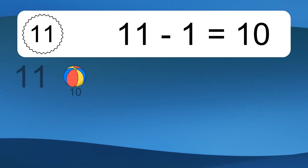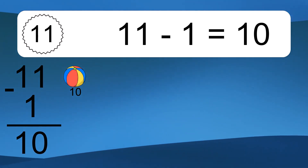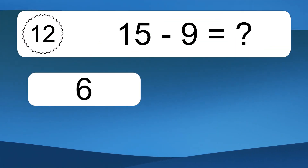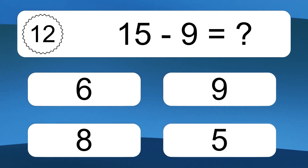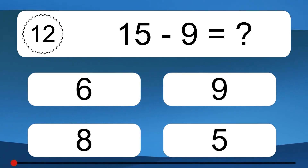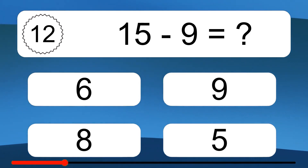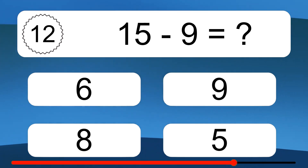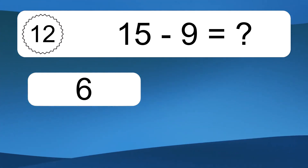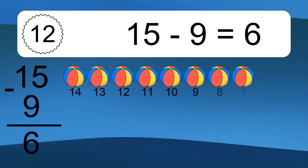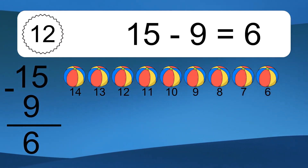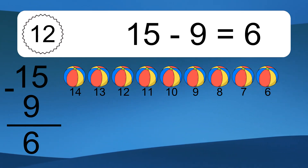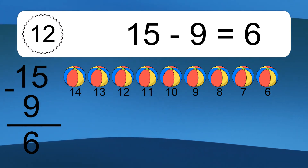11 minus 1 equals what? 11 minus 1 equals 10. Let's count it: 10. 15 minus 9 equals what? 15 minus 9 equals 6. Let's count it: 14, 13, 12, 11, 10, 9, 8, 7, 6.